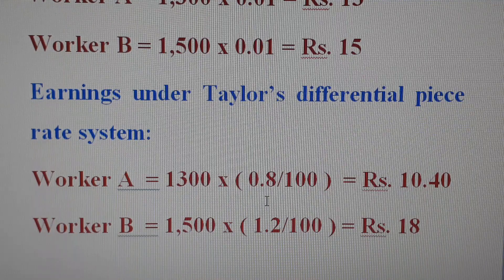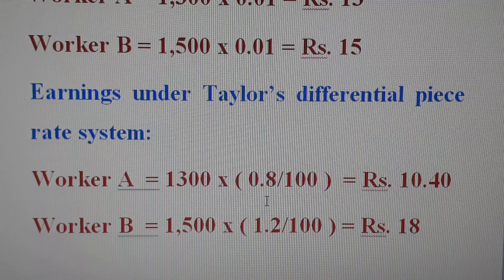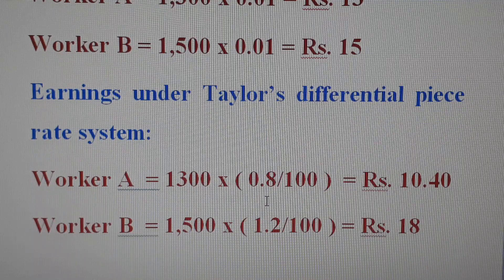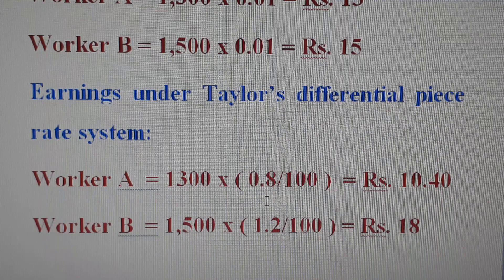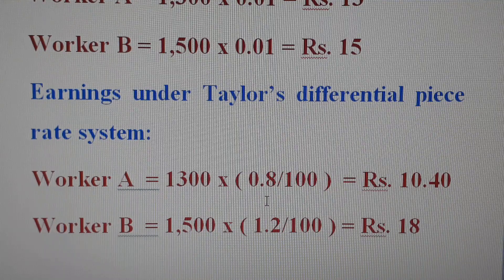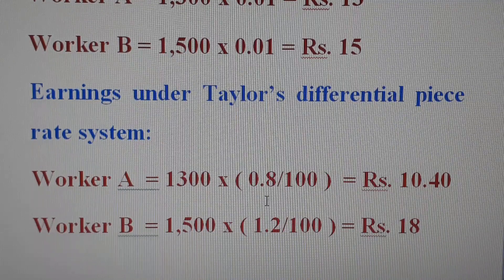Now we will calculate the earnings under Taylor's Differential Piece Rate system. Worker B produces 1500 units. We apply the differential rates accordingly to determine total earnings for both workers under this system.